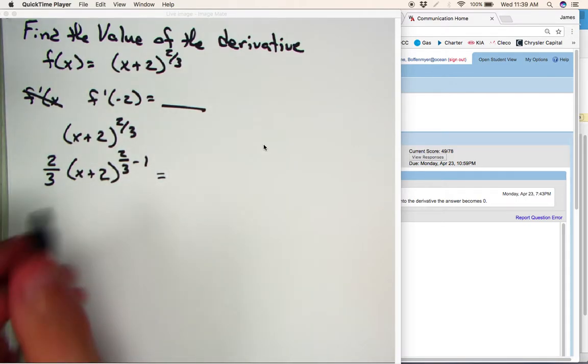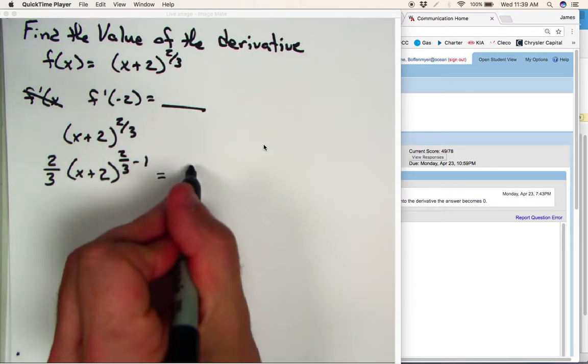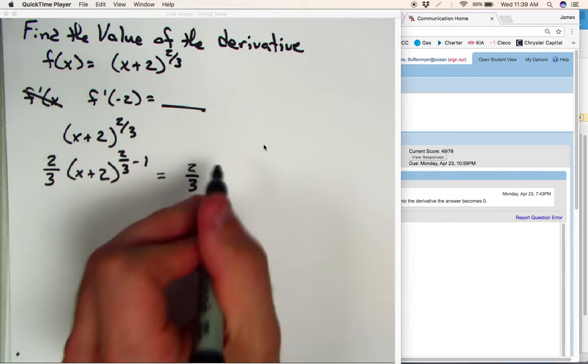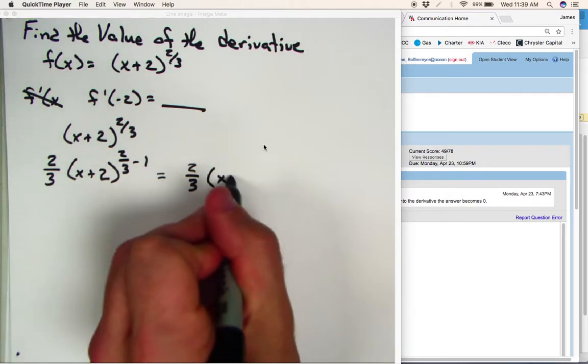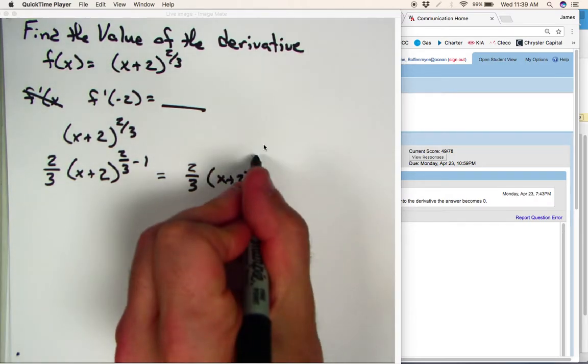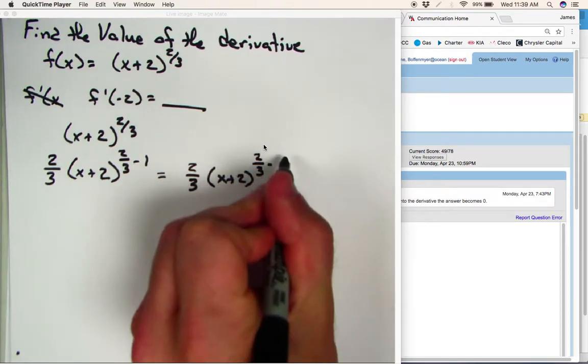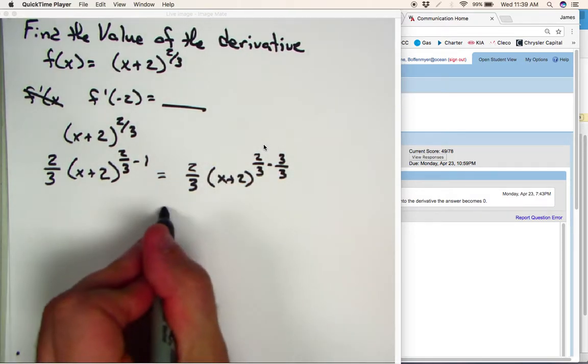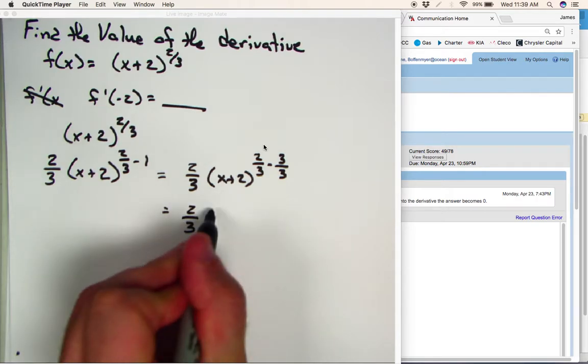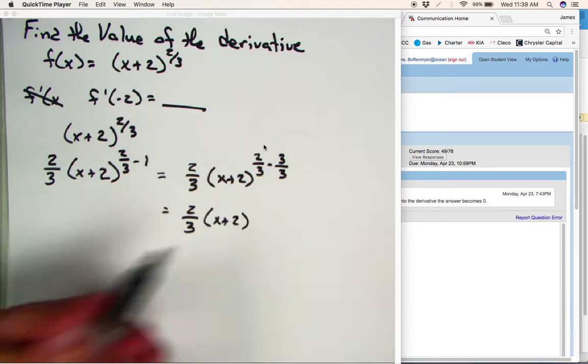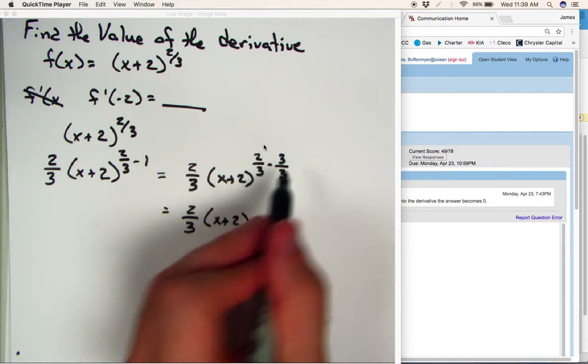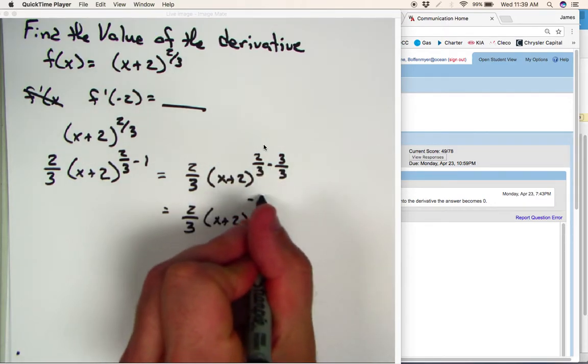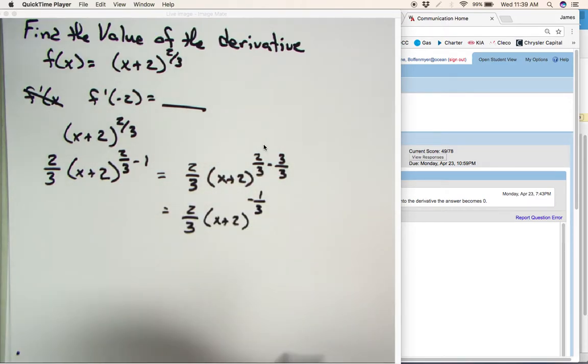So when we do that, that would be 2 over 3 times x plus 2 raised to the 2 over 3 minus 3 over 3. Which, in turn, 2 over 3 times x plus 2 raised to the 2 over 3 minus 3 over 3, which that would mean a negative 1 over 3 for your exponent.